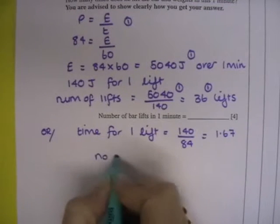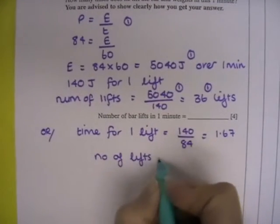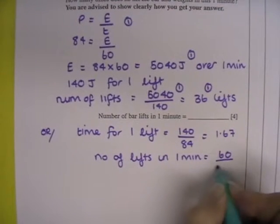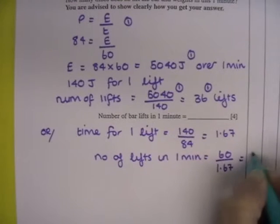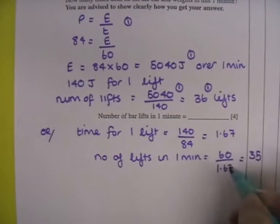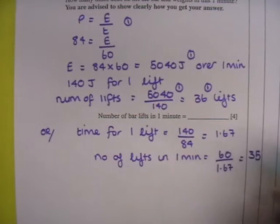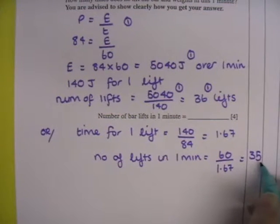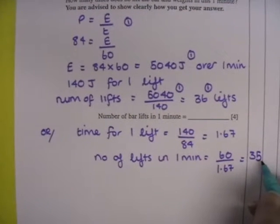So the number of lifts in one minute is 60 divided by 1.67, which gives you 35. The rounding error is introduced here because we would have 1.6666 repeating. But when we round that, we bring in a slight error, which only gives us then 35 lifts.